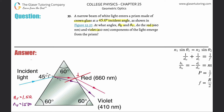Let's take this step by step and do the red one first. The white light comes in and since the different colors have different indices of refraction, they get refracted at different angles relative to one another. That's why when you see light through a prism, you see a rainbow of colors on the other side.